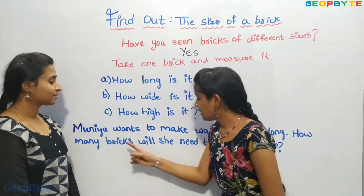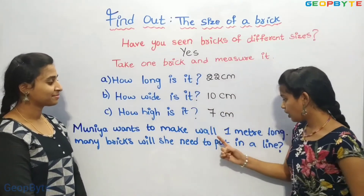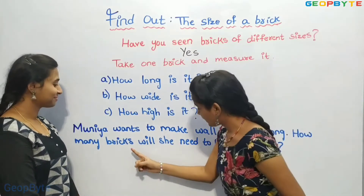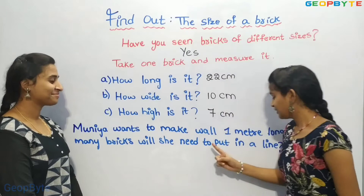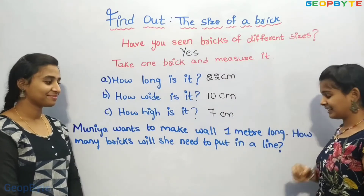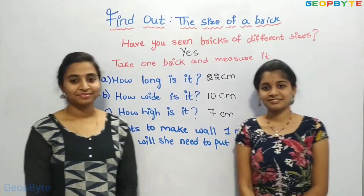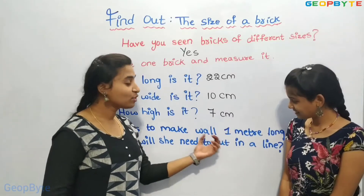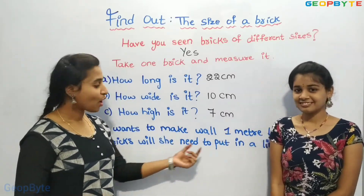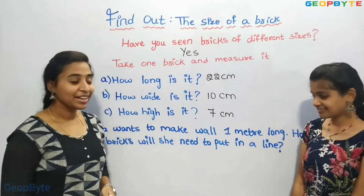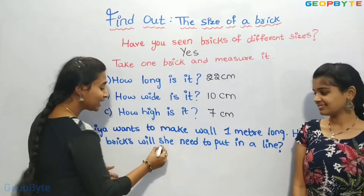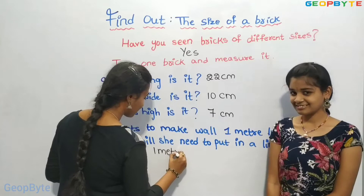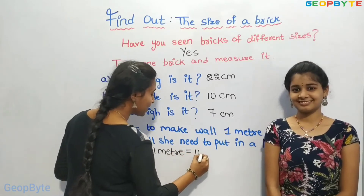Muliya wants to make a wall one meter long. How many bricks will she need to put in a line? Children, she wants to make a wall of 1 meter long. 1 meter is equal to 100 centimeters.